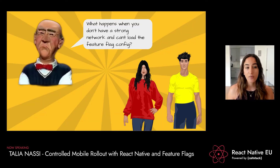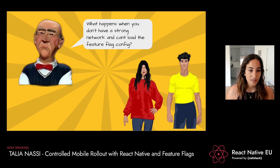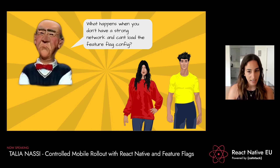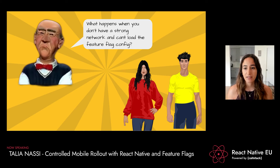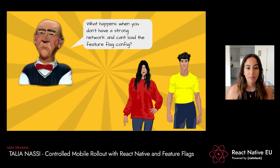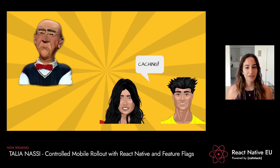But there are naysayers — a grumpy old developer comes in and tells Debbie and John that their plan only works when you have a strong network connection, because you need to pull the current feature flag status from the server. In mobile development, what happens when you don't have a strong network and can't load the feature flag configuration? Debbie and John respond: they use caching.